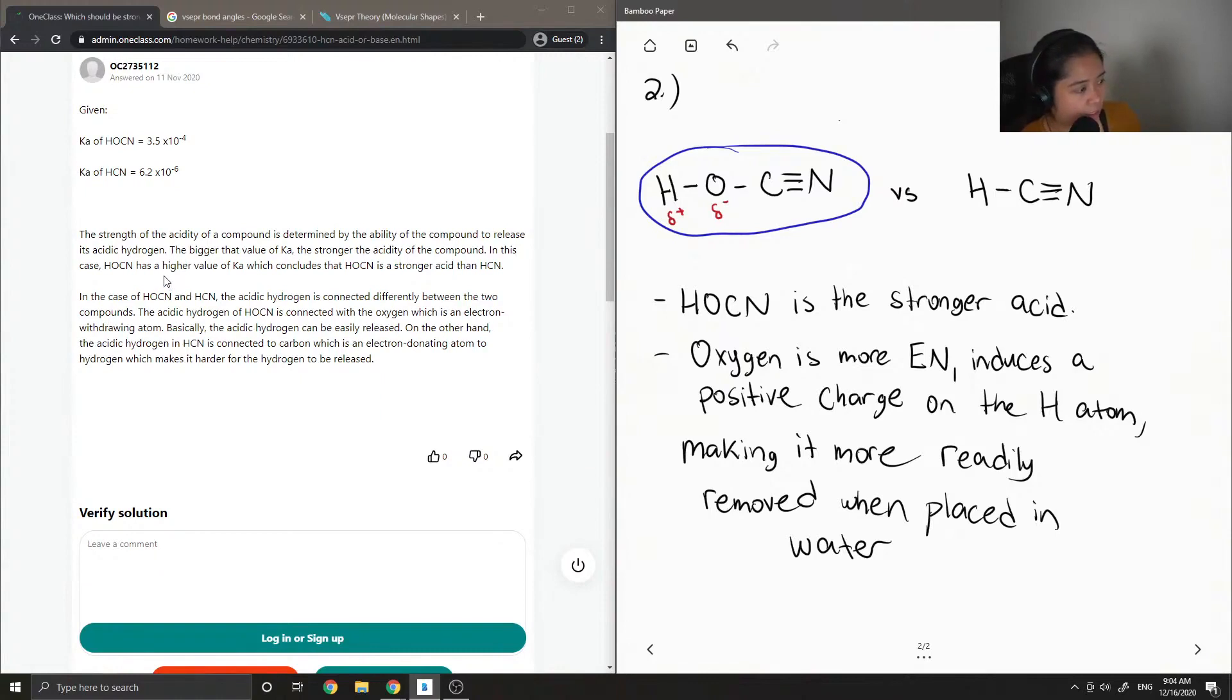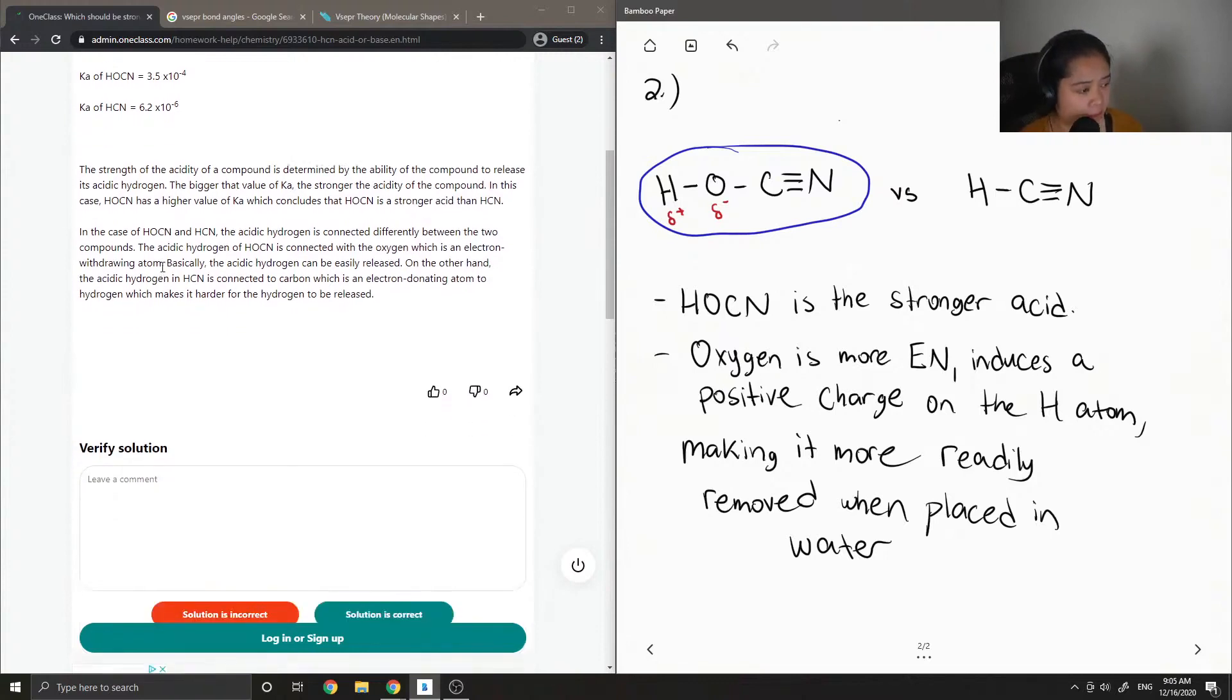In this case, HOCN has a higher value of Ka, which concludes that it is a stronger acid than HCN. Yes, so that is correct as well.